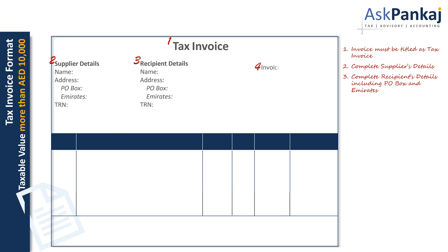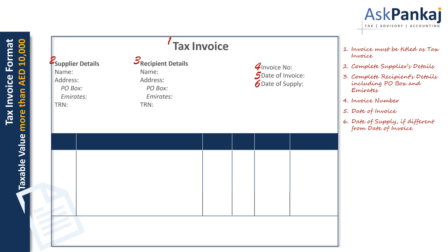The next requirement is that the invoice should contain the invoice number and the date of the invoice. The invoice should also mention the date of supply if it is different from the date of invoice. In addition to these details, the invoice could continue to contain additional information that is usually mentioned on an invoice.